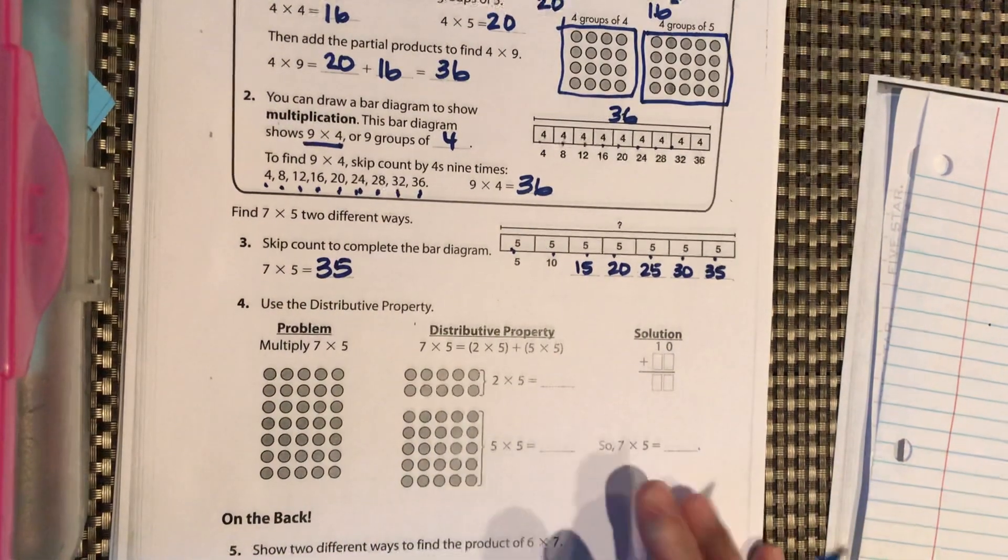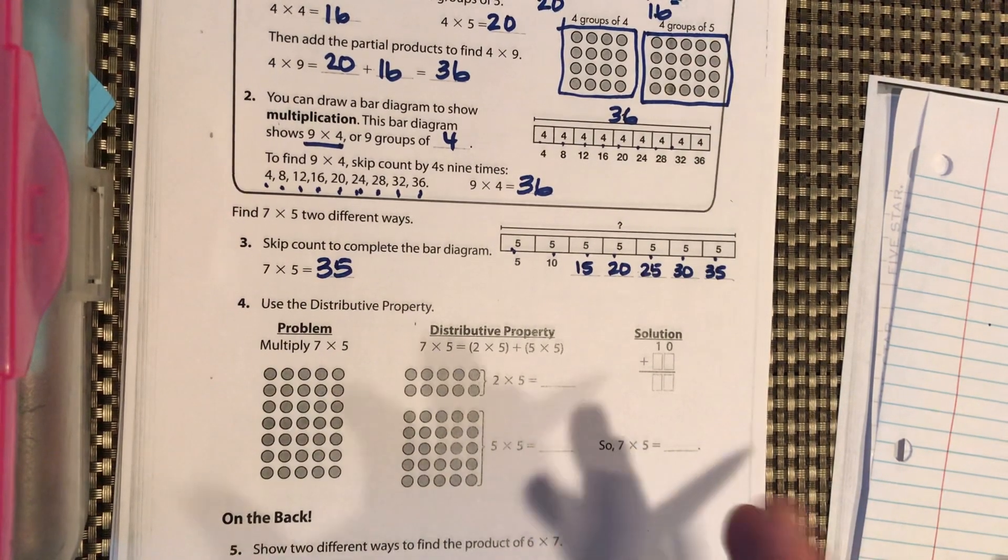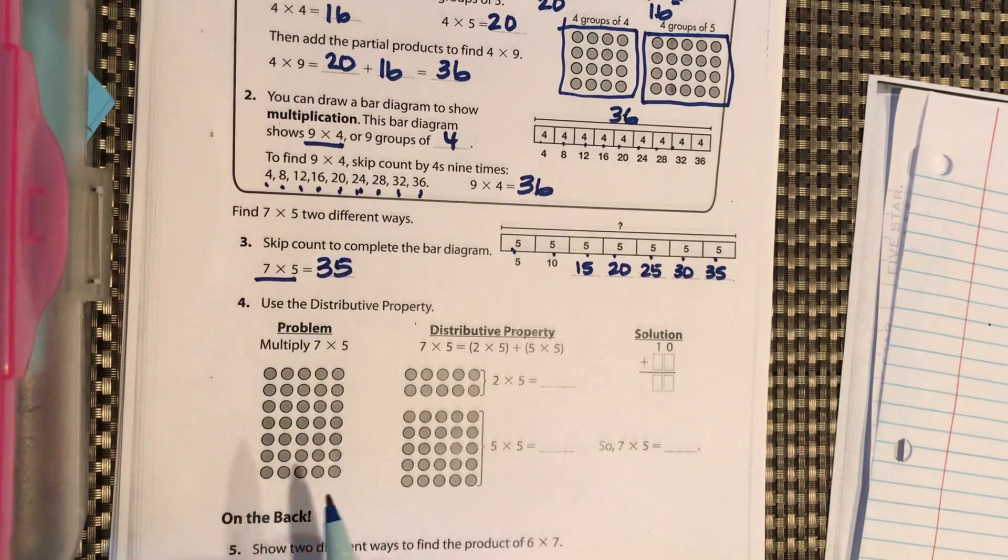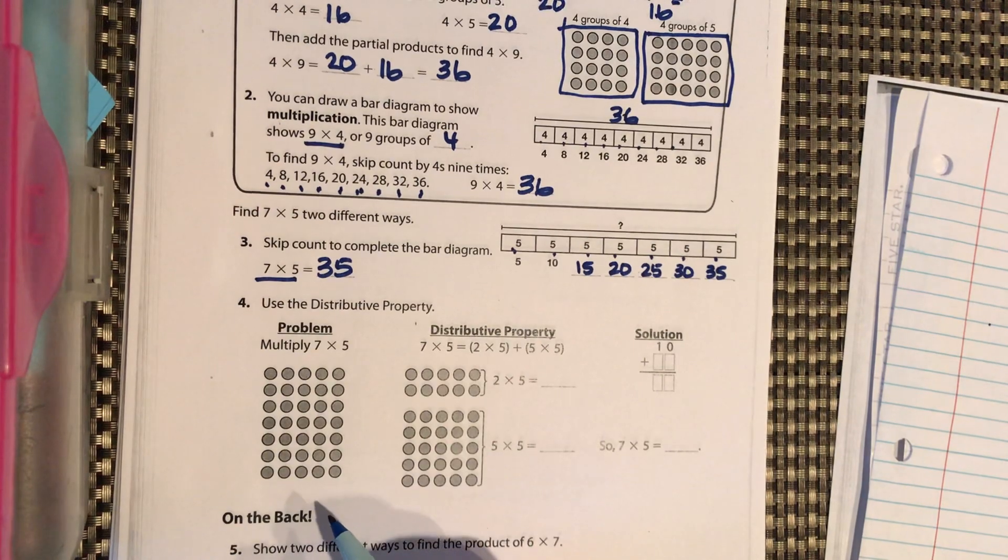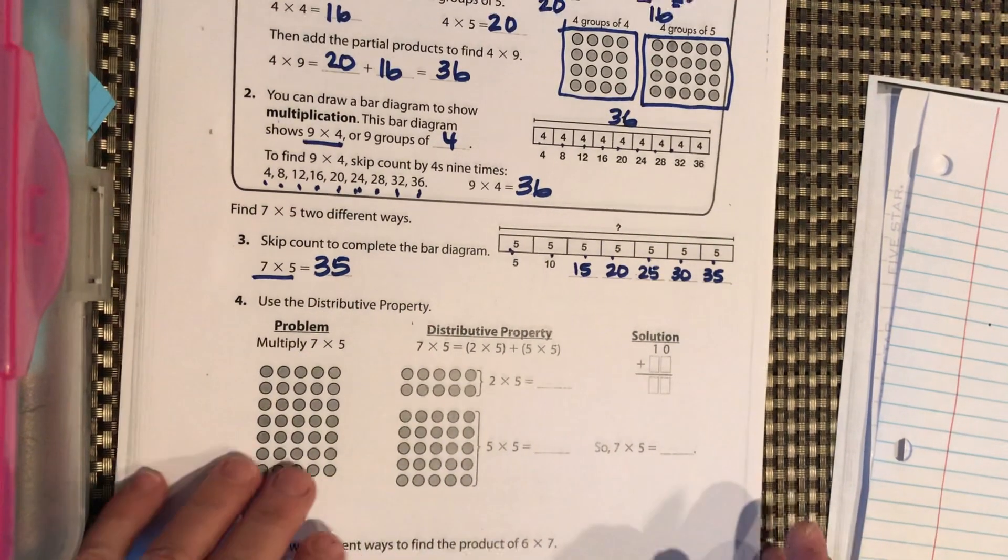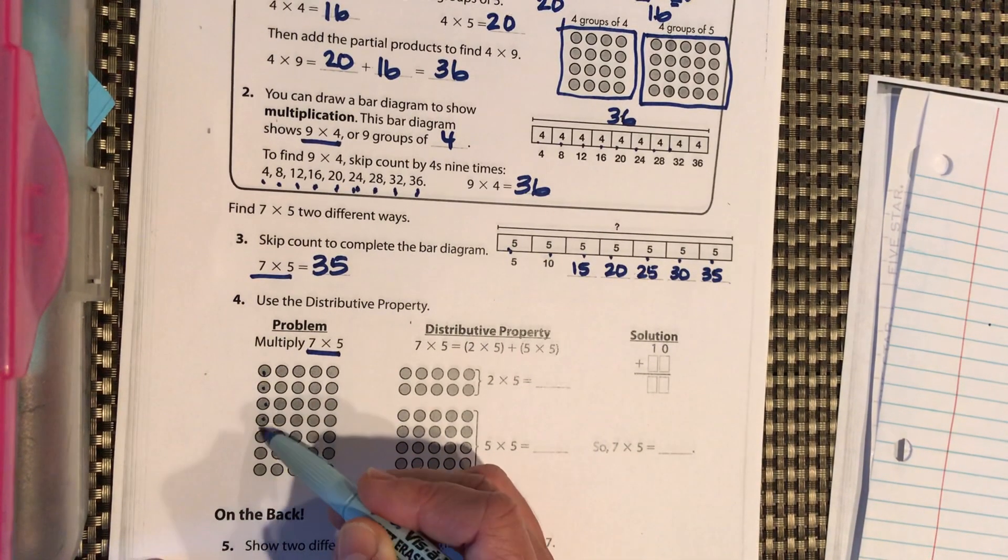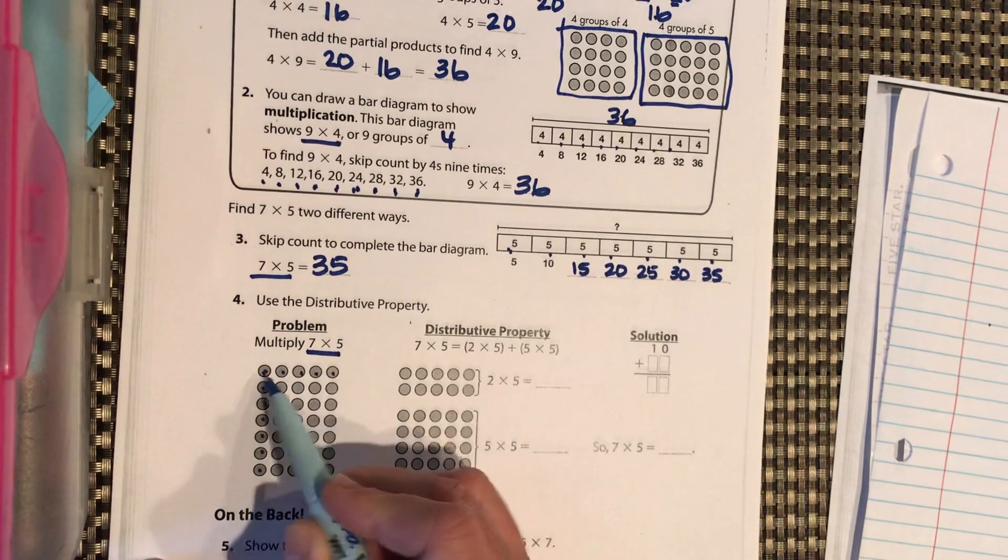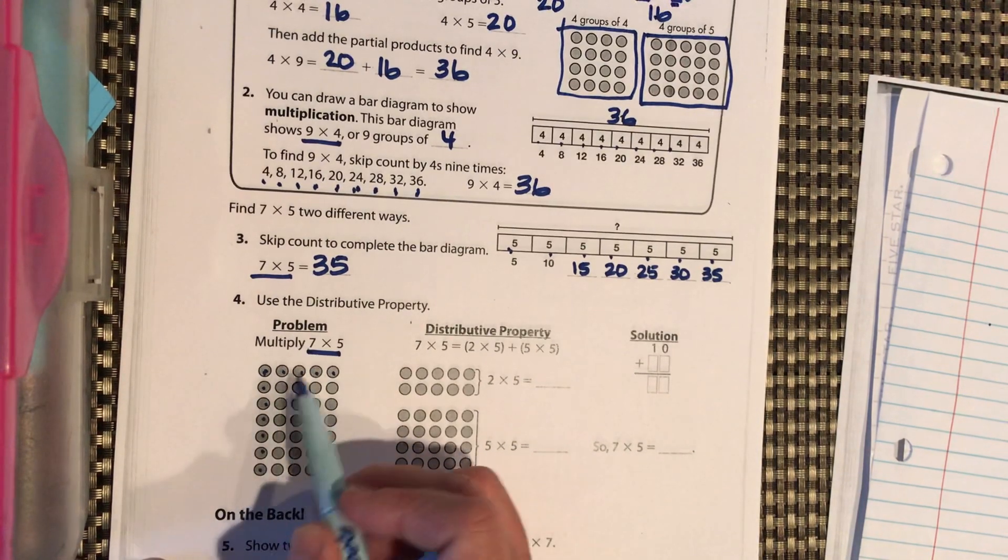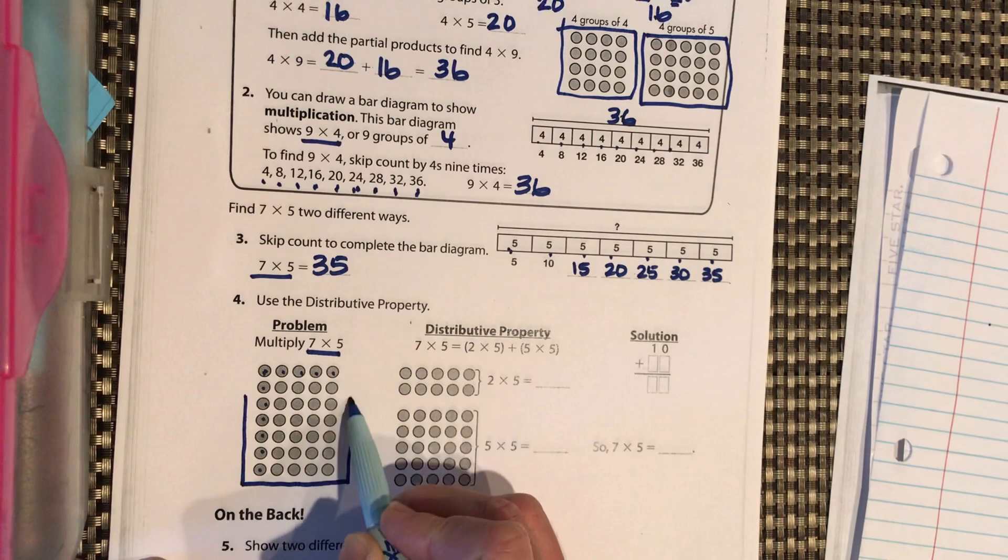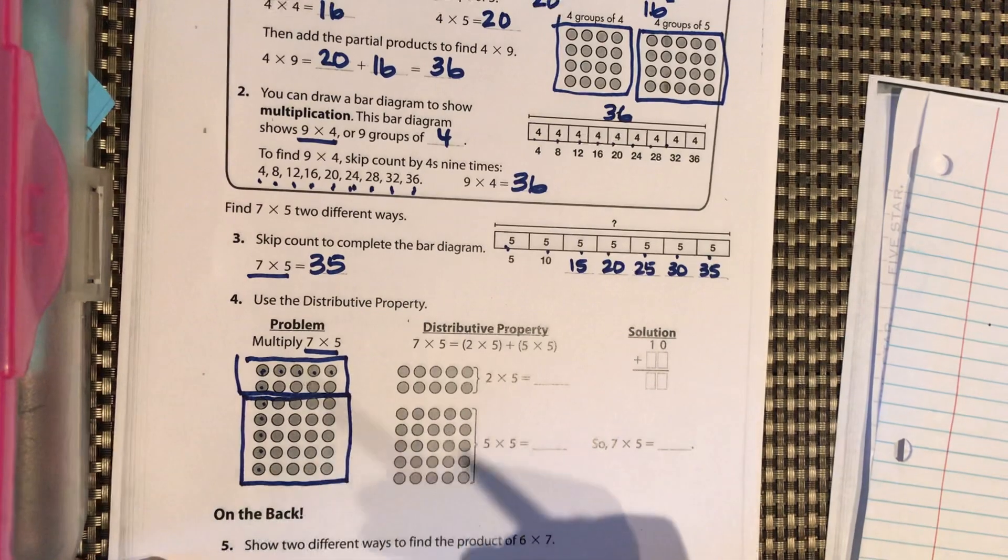Now, we can use the distributive property. Now, again, with the 5s, I doubt we would need to use the distributive property because we can count by 5s. But let's take an easy problem that we know of 7 times 5 and refresh our memory on how to use the distributive property. So if we have a harder problem, then we can remember how to do this strategy to help us. So multiply 7 times 5. Again, same problem. So we have 1, 2, 3, 4, 5, 6, 7. 1, 2, 3, 4, 5. So we have an array of 7 groups of 5. We can break 7 groups of 5 into 5 groups of 5 and 2 groups of 5. Break it down. Add it up.